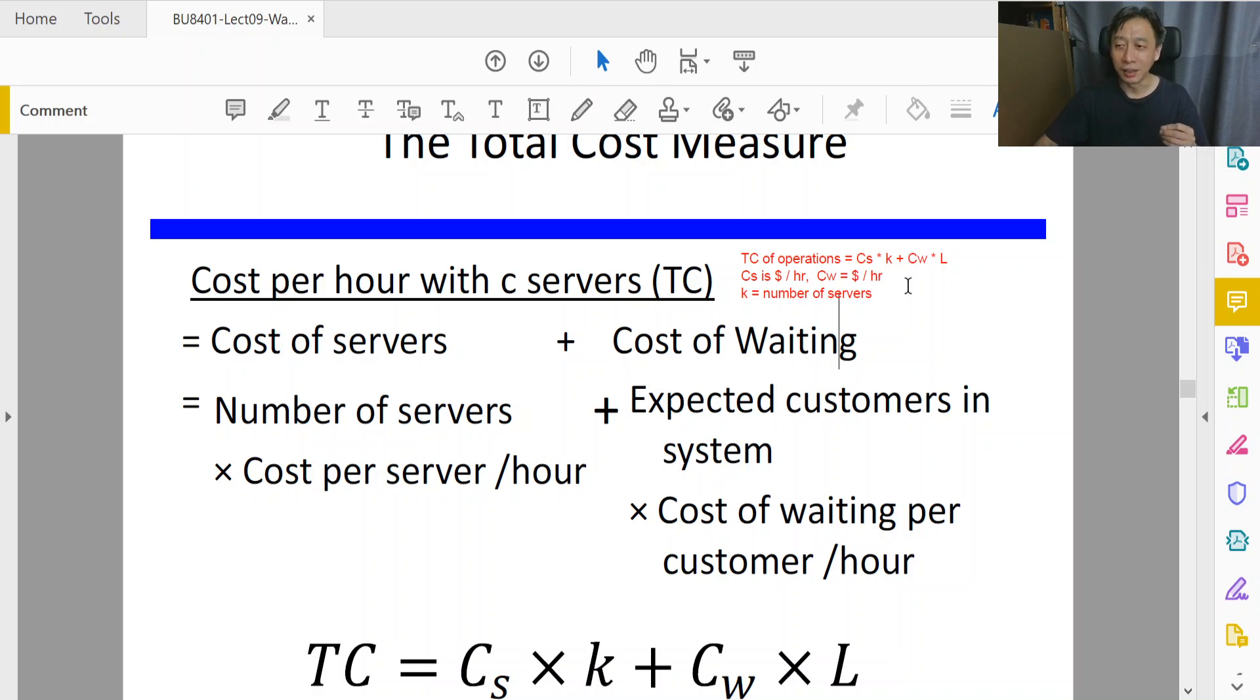For Cw, this number however is a sort of a proxy number. This number is not a physical actual dollar that the queue system owner such as the bank or the factory owner pays to the customer. You and I don't get dollars when we stand in line. It'll be nice maybe as a part-time hobby to stand in line and get money, but that's not going to happen.